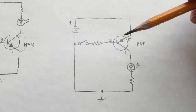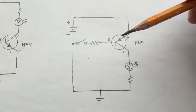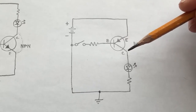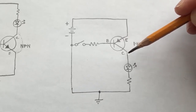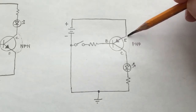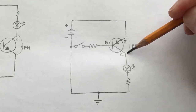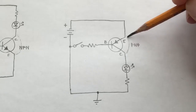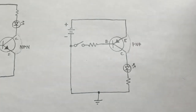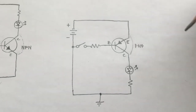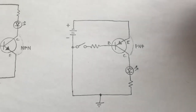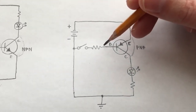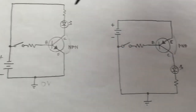In a PNP transistor, the function is exactly the same. The base is the control lead, and when the transistor is on, it's as if there is a jumper between collector and emitter — current is shunted between those two like a closed switch. The difference is that we use a current flowing out of the base to turn the transistor on, instead of current flowing into the base.